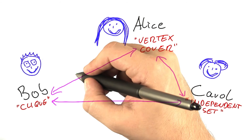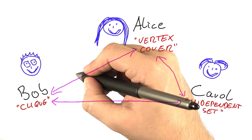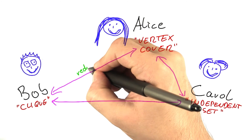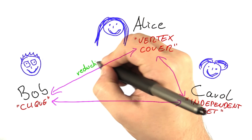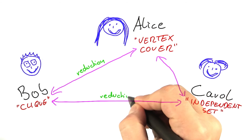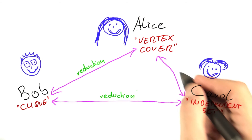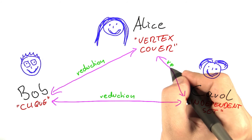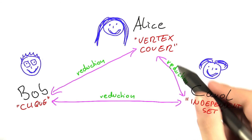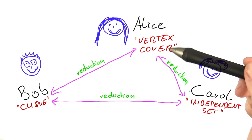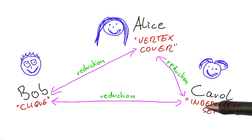So actually we can also draw this connection here, because we already know about these two connections. What they have discovered is something that is commonly known as a reduction. A reduction is basically a transformation between two problems, so that if you find out that one of them is tractable, then the other one is tractable as well.